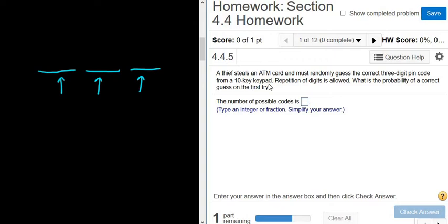Well it's a 10-key keypad so there's 10 ways to pick the first digit, because there's 10 choices. And then there's 10 ways to pick the second digit and that's because repetition is allowed. If it wasn't allowed then this would be a 9. And there's 10 ways to pick the third digit.